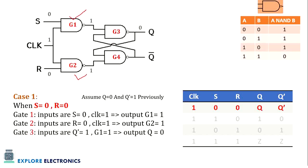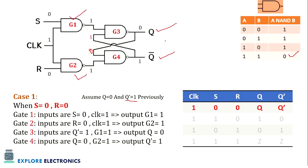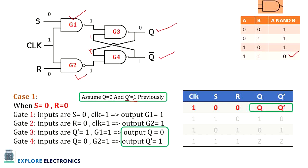Gate 3 takes the output from Gate 1 (which is 1) and the previous Q bar (which is 1). For inputs 1 and 1, the NAND output is 0, so Q becomes 0. Gate 4 generates Q bar by taking this newly generated Q=0 and Gate 2's output of 1, giving Q bar=1. Comparing to our assumption of Q=0 and Q bar=1, we get the same values — confirming that when S=0 and R=0, Q and Q bar hold their previous state with no change.